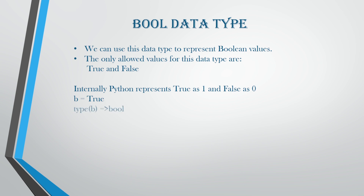Internally, Python represents true as one and false as zero. For example, if b is equal to true and you check the type of it, that is going to show that it is a boolean format. For example, if a equals 10, b equals 20, and c equals a less than b, then printing c is going to give you the value true. This is the boolean data type. Let us see this small program in Visual Studio.